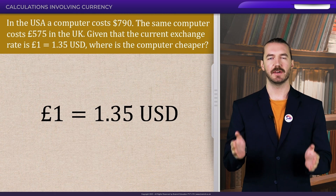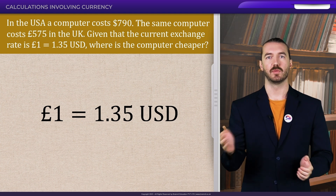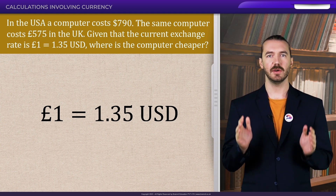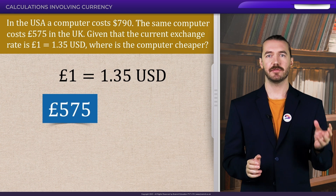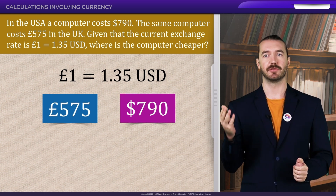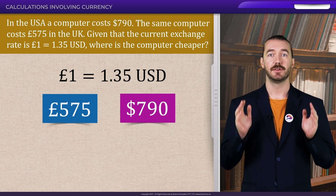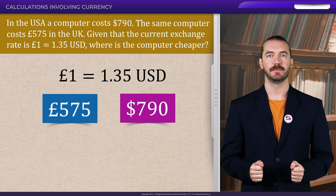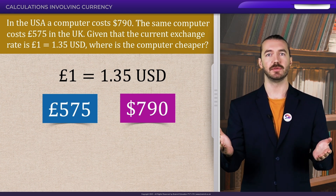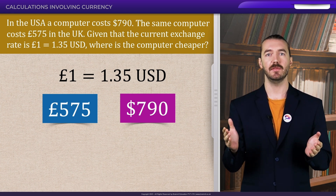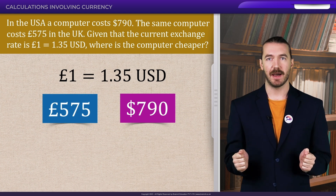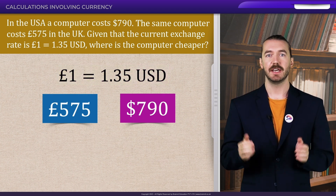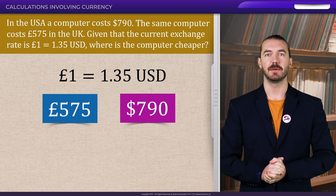In the question, we are given that £1 is worth $1.35. We are also asked to compare £575 and $790. To compare them, we must convert them to the same currency. In this case, we can choose to either convert £575 into US dollars or $790 into GBP.